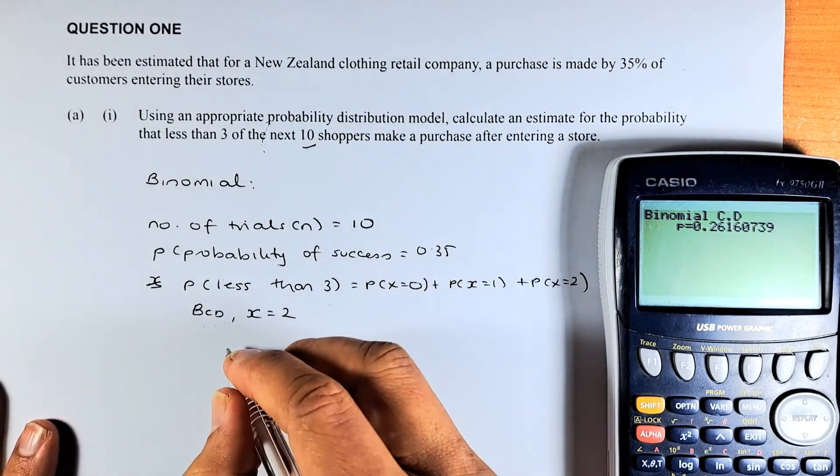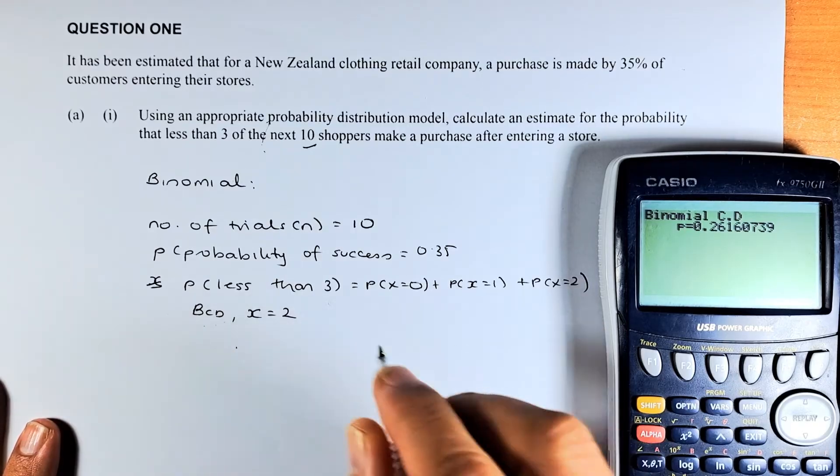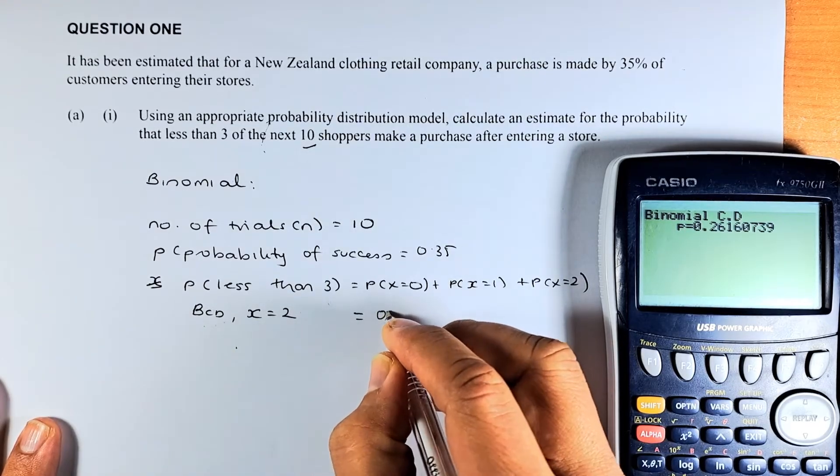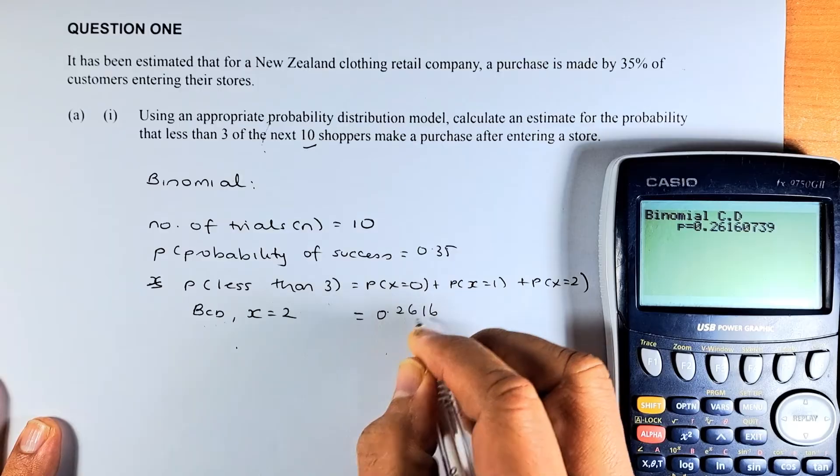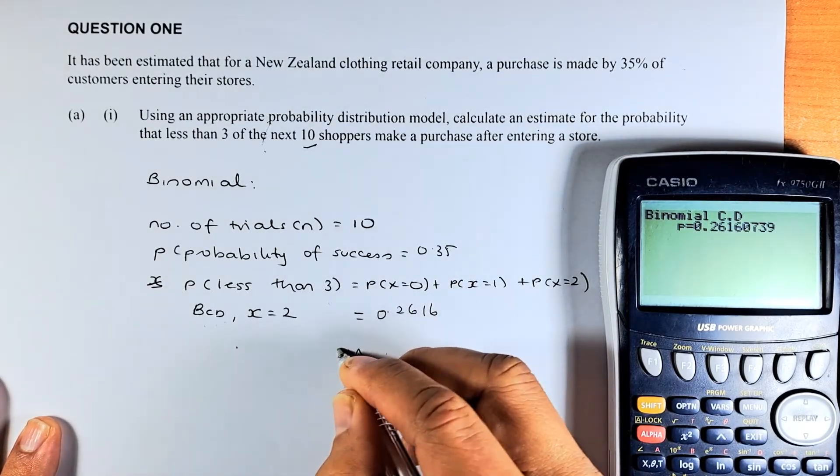And now you are going to press the execute button. And the answer is going to be 0.2616. So you can get that. There is a merit in this paper.